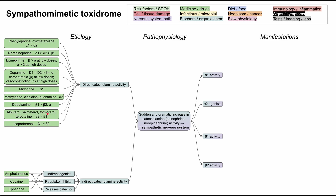Albuterol, salmeterol, formoterol, and terbutaline are used in asthma treatment — these are beta agonists, beta-2 more than beta-1. Isoproterenol also hits beta receptors, with beta-1 equal to beta-2. An overdose of any of these — whether iatrogenic or from a patient taking too much of their prescription — can trigger a sympathomimetic toxidrome by increasing direct catecholamine activity.